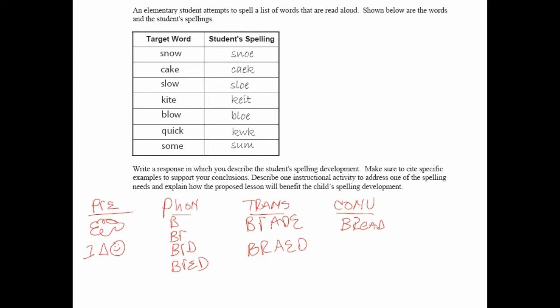If you get spelling data on the test, you'll have to describe the student's current level of spelling. To do so, you have to read each of the words and decide what the complexity is. When we look at the target word snow, it has two complexities: there is a blend in the initial position of the word, and there is a word family — a long O rhyme.